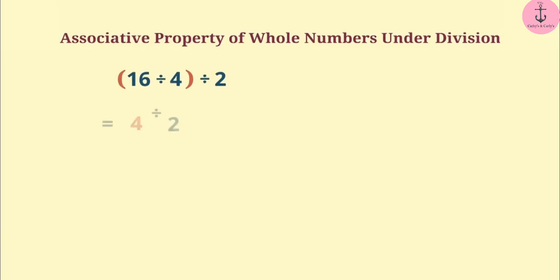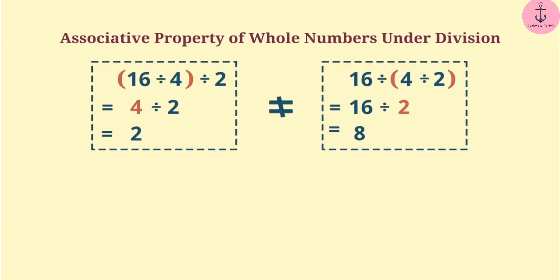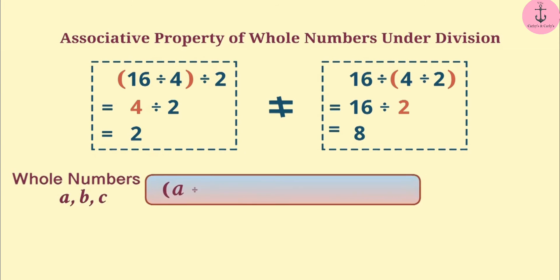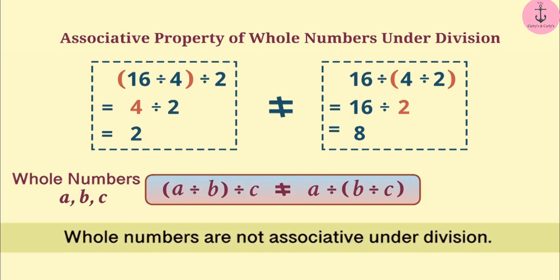Now if we talk about division, any three whole numbers cannot be divided by changing the order of grouping. For whole numbers A, B and C, (A ÷ B) ÷ C and A ÷ (B ÷ C) are not equal. In this way, whole numbers are not associative under division.